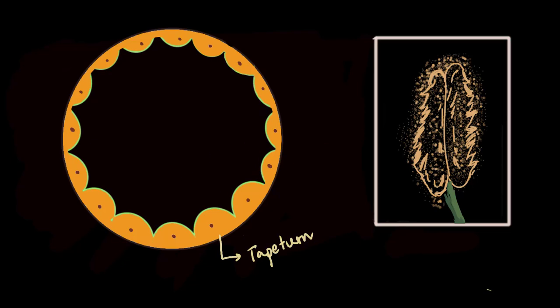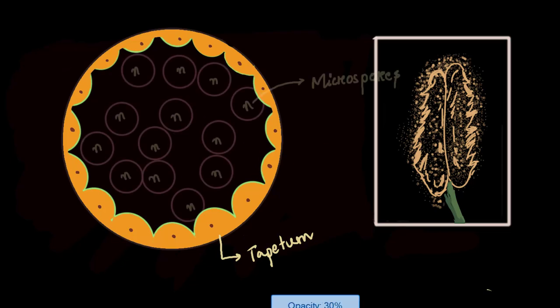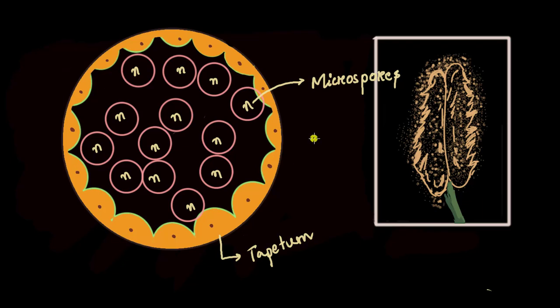Inside this tapetum layer we will have microspores which are formed by meiotic division and therefore they are haploid. We discussed how these cells are formed in our previous videos. Now we will look into the changes that take place in the microspores. For that, let us just keep one cell and look into the changes taking place in that cell.